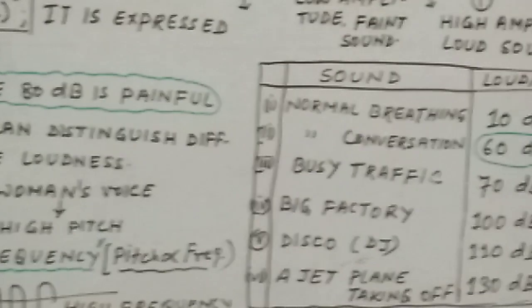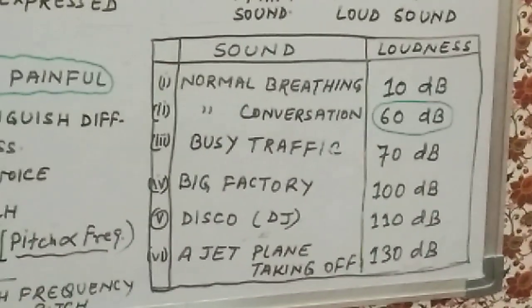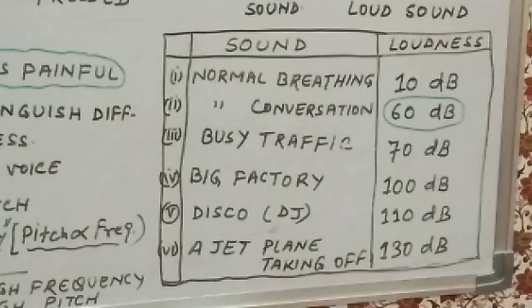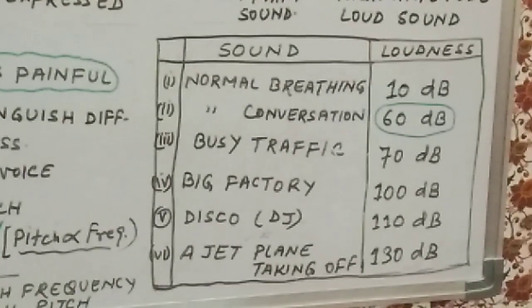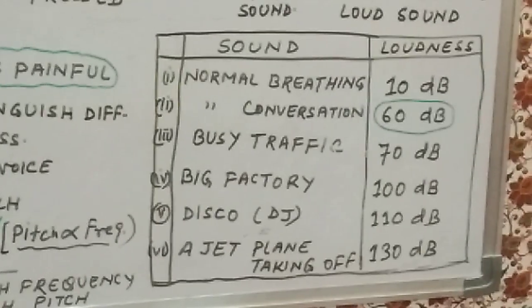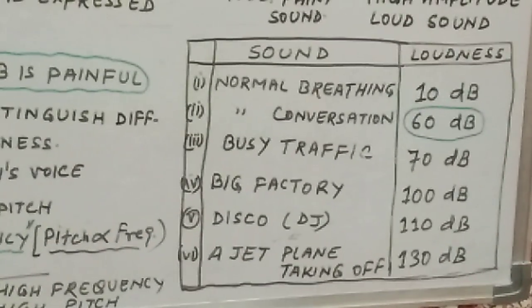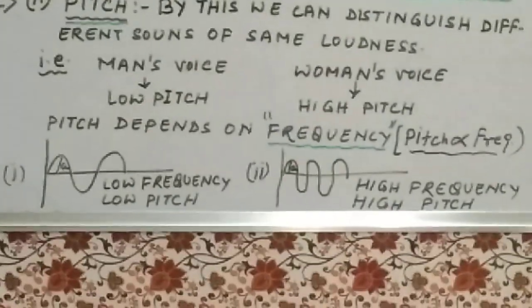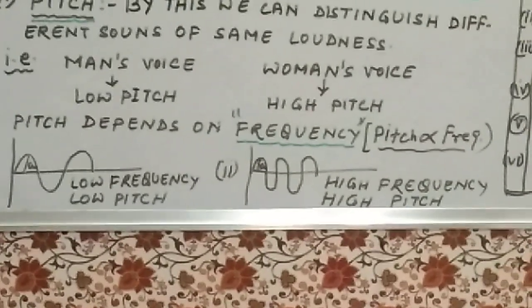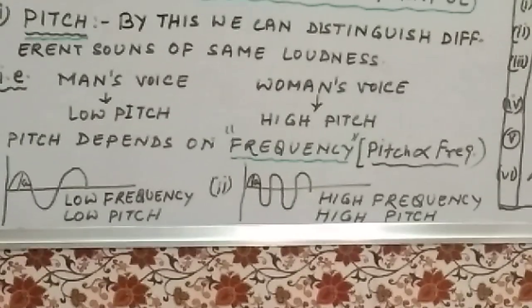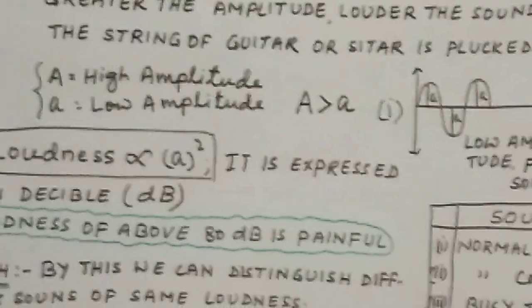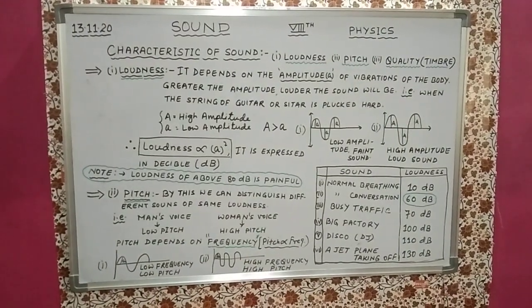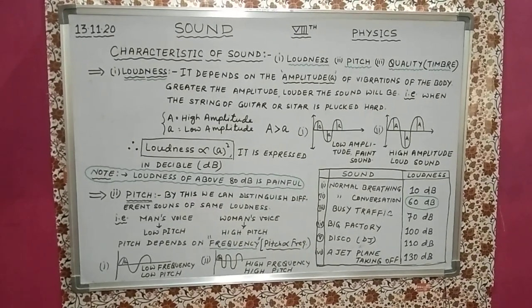Go through this table: normal breathing is 10 decibels, normal conversation is 60 decibels, busy traffic is 70 decibels, big factories are 100 decibels, disco or DJ music is 110 decibels, and a jet plane taking off is 130 decibels. To recap: low frequency gives low pitch sound — men's voice; high frequency gives high pitch sound — women's voice. Note down everything in your notebook. Thank you.